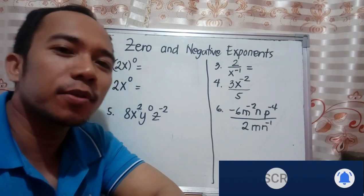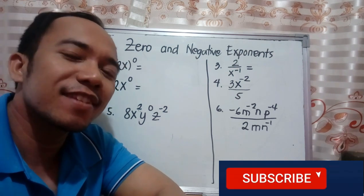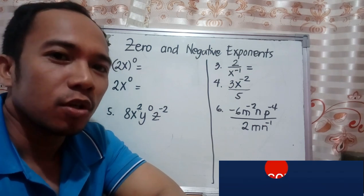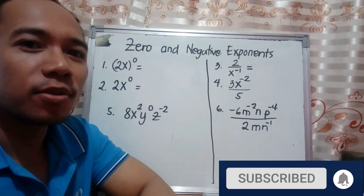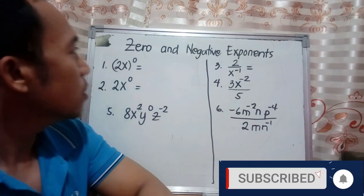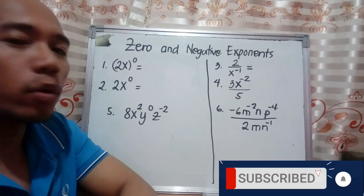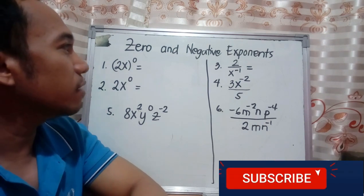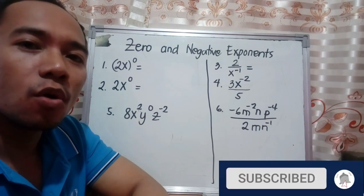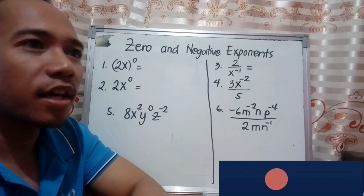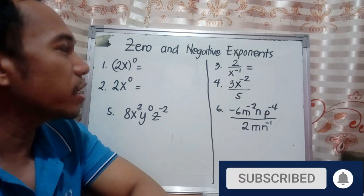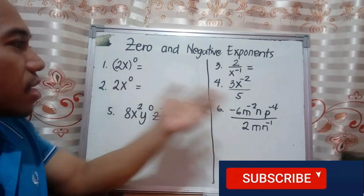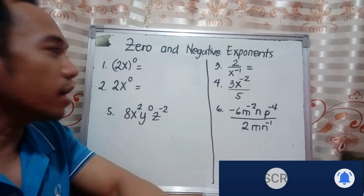I have now the free time to create another video because there was a fumigation at the school, so I need to create another video for you. The topic that I will be discussing today is zero and negative exponents. What are the effects of zero and negative exponents? How do we simplify these examples? Let's start.